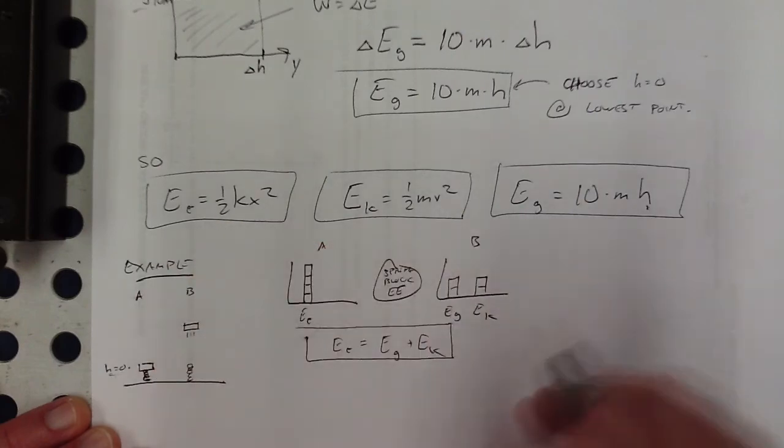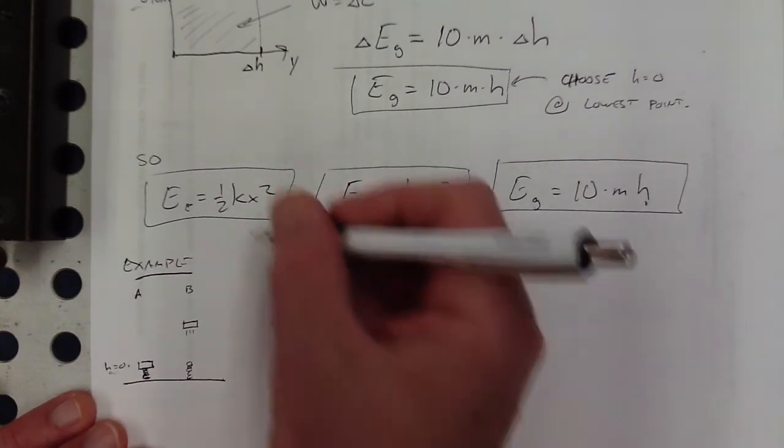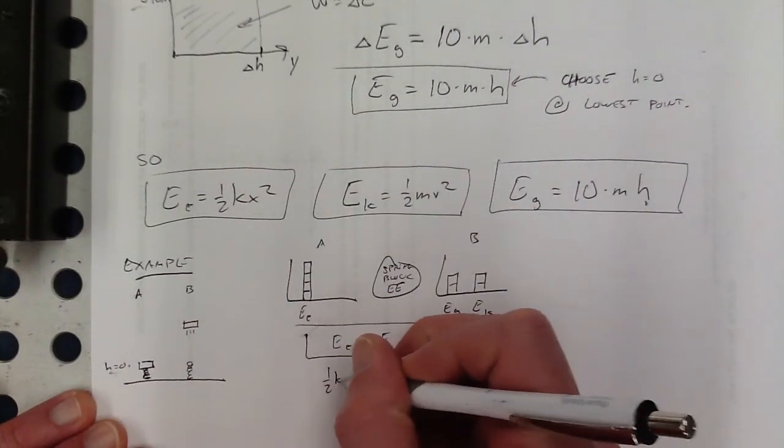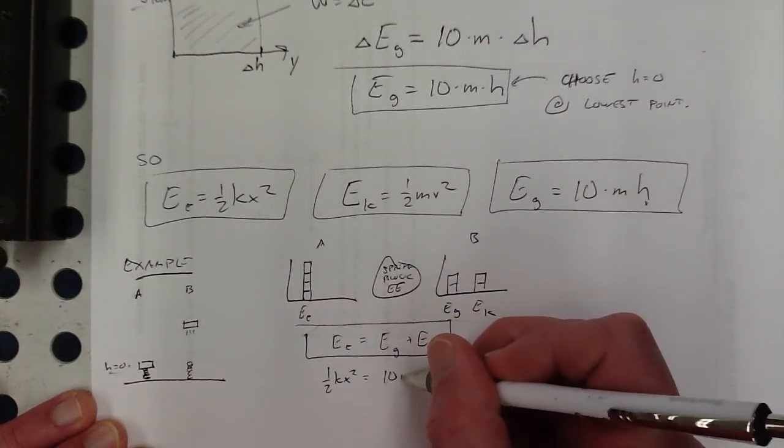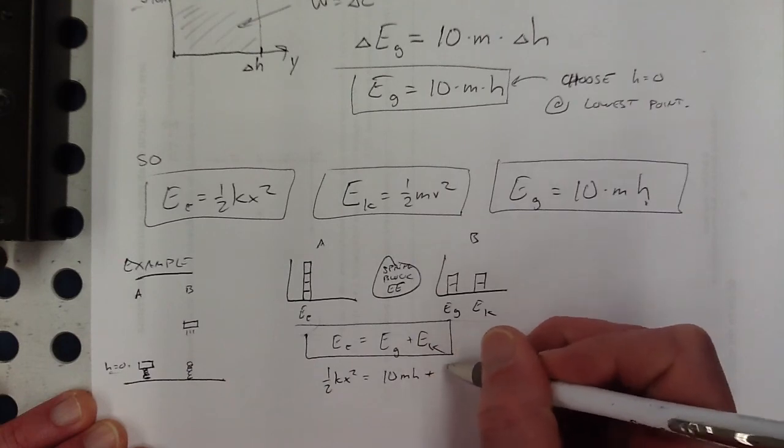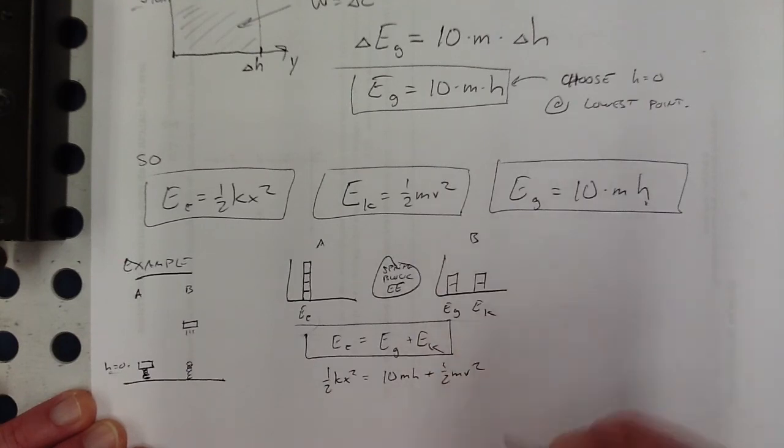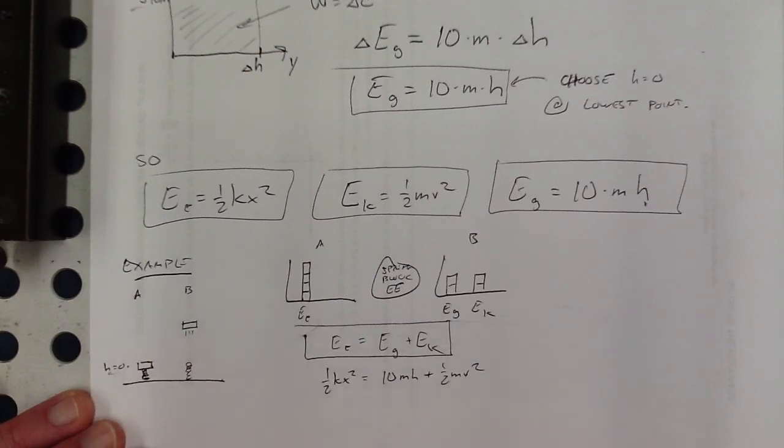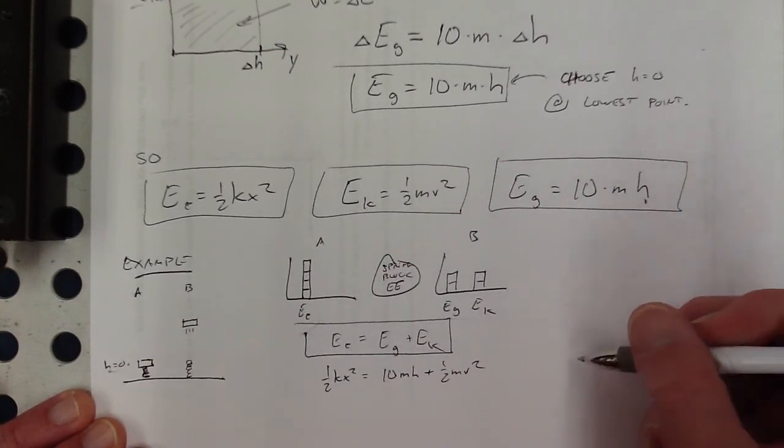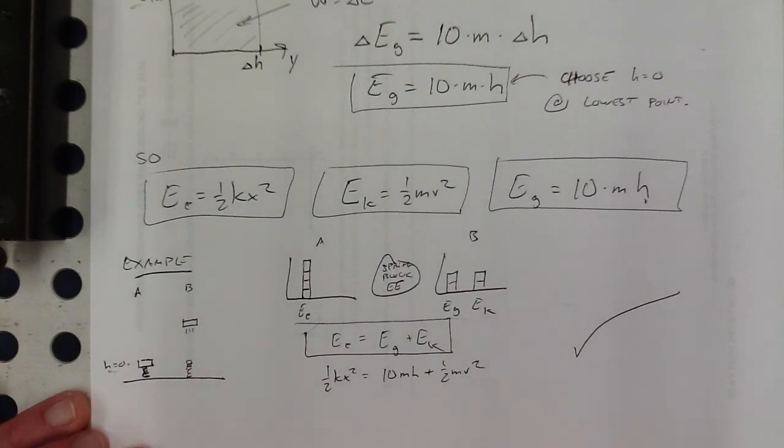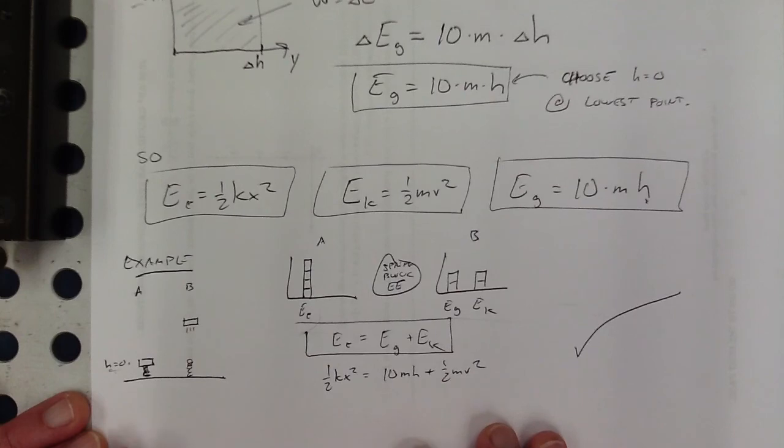So our qualitative equation would just be E_E here is equal to E_g plus E_k. But now I can actually use these things. Oh well, E_E is one-half kx squared. And that would be equal to 10mh plus one-half mv squared. And then, you know, depending on the problem, I didn't give you any particular quantities here, but you would plug in the things that you know, cross your fingers, hope that there's only one thing that you don't know, and solve for that thing. So this is the game that we can play now with these models. And that should do it for your notes.